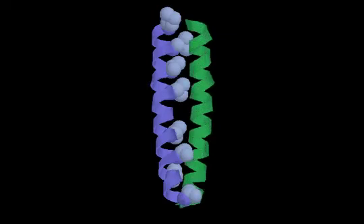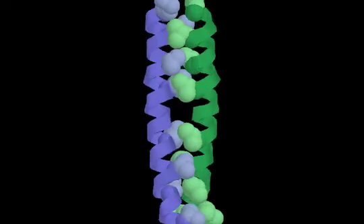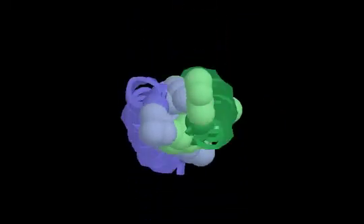Helices containing distinct hydrophobic and polar sides are called amphipathic. In a coiled coil, two amphipathic helices are aligned so their hydrophobic sides snuggle tightly together in the center, with their polar faces exposed to the solvent.